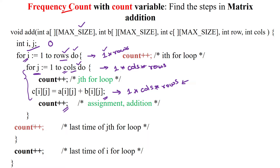When exiting the j-loop, this count is incremented once for the exit condition of the inner loop. Since the j-loop is inside the i-loop, this exit executes one unit of time, row number of times — because the count is inside the outer rows loop.